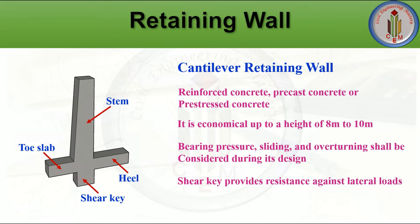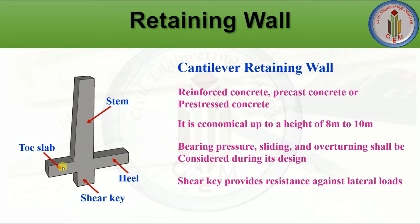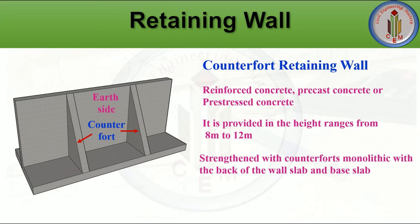It requires a smaller quantity of concrete compared to a gravity retaining wall, but the design and construction must be executed carefully. The shear key provides resistance against lateral load and sliding. Proper width of the stem, toe slab, and heel slab, as well as their thicknesses, must be chosen according to design requirements.